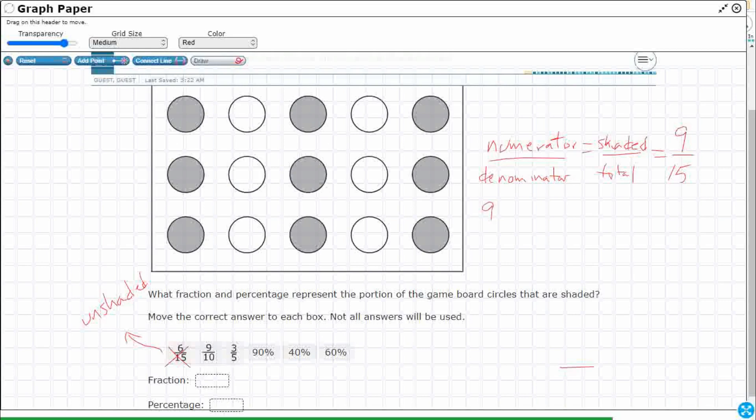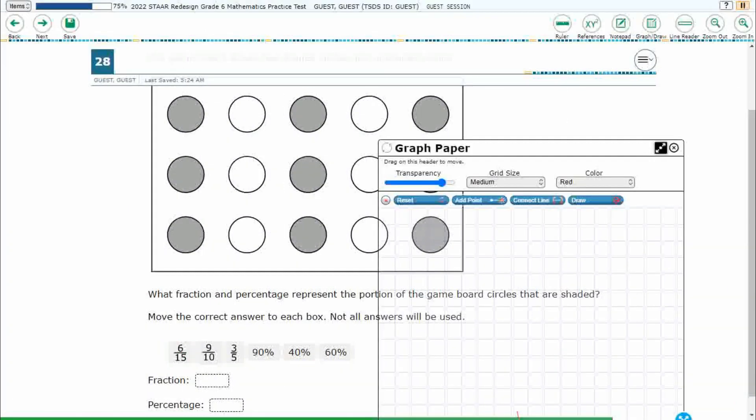So thinking of an equivalent fraction, I'm thinking, okay, what is a factor that can be divided into both nine and fifteen? I could do three into both. Divide by three over three. So that's dividing by one, which means it's the same fraction. It's just looking different. Three fifths. Okay. So nine fifteenths is equal to three fifths. That works.